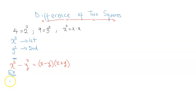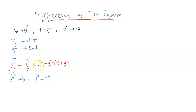For example, let's apply the difference of two squares to factorize x squared minus 49. So here, x squared is already established. Now 49 can be written as 7 squared, so it's obvious that y is 7. Applying this, we're going to have x minus 7 times x plus 7. That's all.